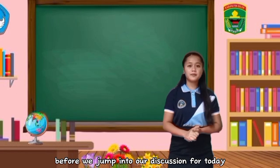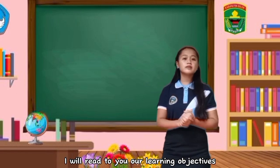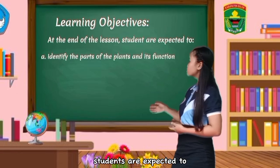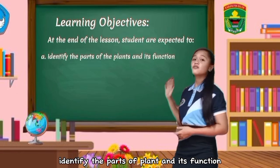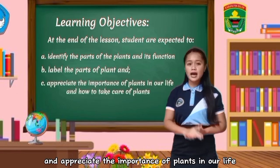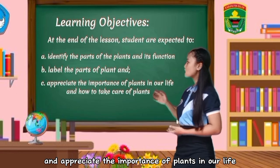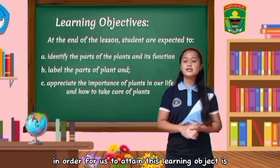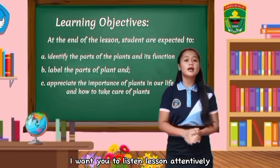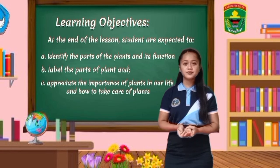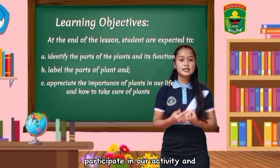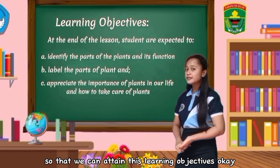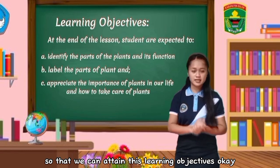Before we jump into our discussion for today, I will read to you our learning objectives. At the end of the lesson, students are expected to: identify the parts of plants and their functions, label the parts of plants, and appreciate the importance of plants in our life and how to take care of plants. In order to attain these learning objectives, I want you to listen attentively, participate in our activities, and behave well.